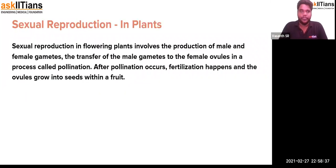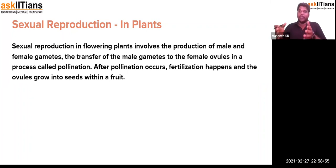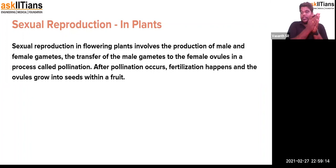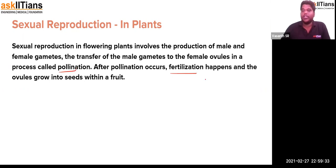Sexual reproduction in plants is one of the most important roles when it comes to evolution and passing characteristics to the next generation for survival. It involves two gametes — the male gamete from the male reproductive part and the female gamete from the female reproductive part. The male gamete is present in the pollen grain produced from the stamen, and the female gamete comes from the ovule inside the ovary. Through pollination and fertilization, seeds and fruits are formed.